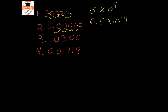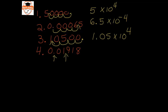For number 3, we're moving the decimal point, so we write 1.05 times 10. This value is larger than 1, so it's going to be a positive exponent: 1, 2, 3, 4 — so that's 10 to the 4th. For the final one, we move the decimal point and get 1.918 times 10 to the... moving it 1, 2 places. And since this value is smaller than 1, we have to put a negative sign.